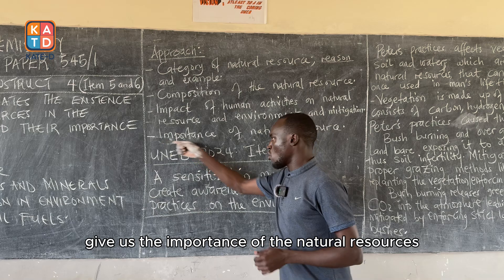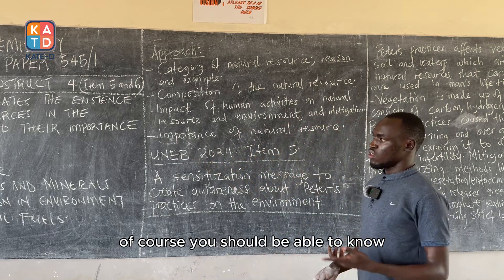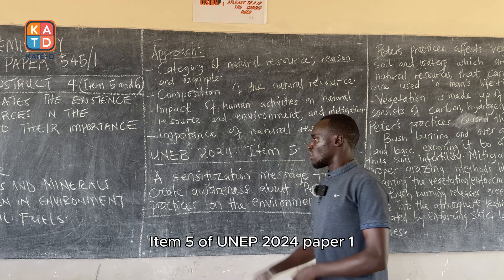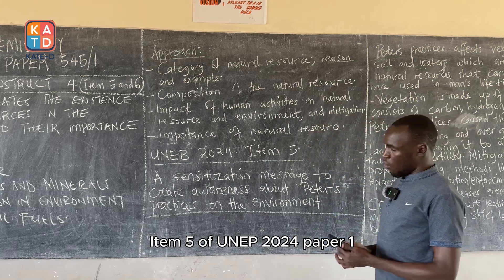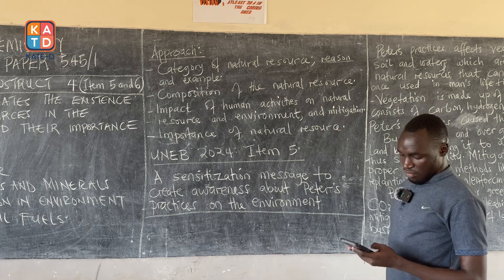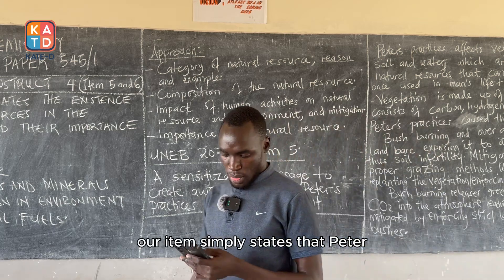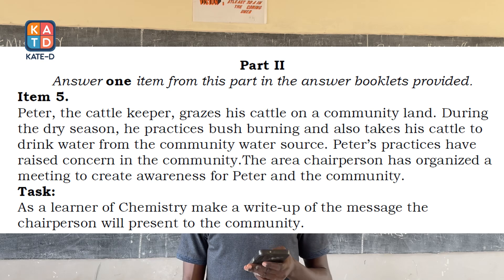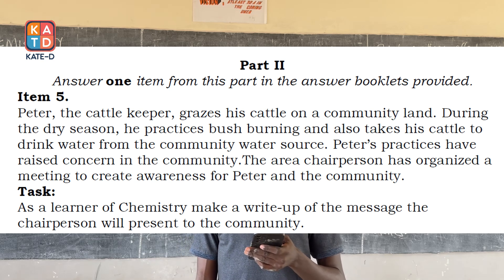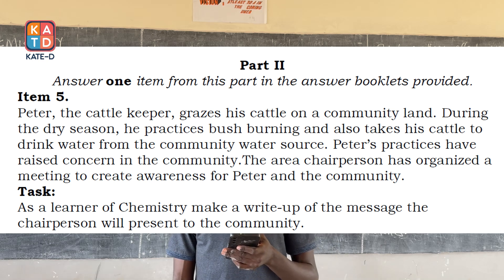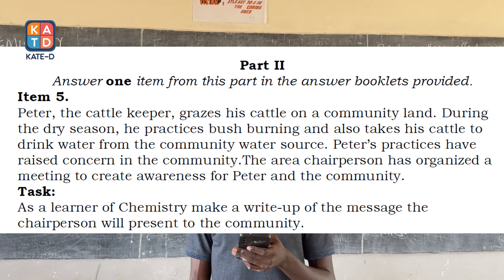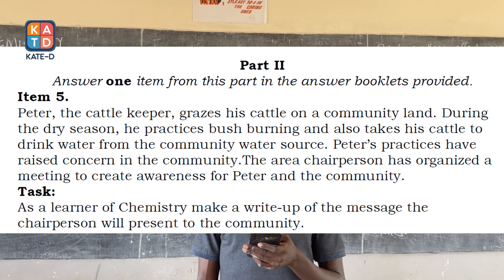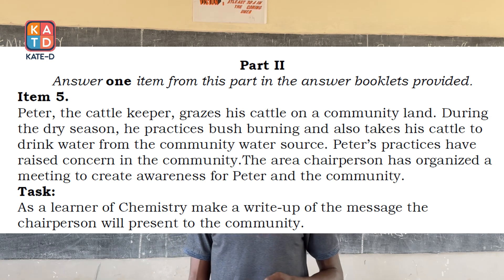Thereafter, give the importance of the natural resources — you should be able to know the importance of the natural resources you are talking about. Now we are going to look at Item 5 of UNEV 2024, Paper 1. The item states that Peter, the cattle keeper, grazes his cattle on community land. During the dry season, he practices bush burning and also takes his cattle to drink water from the community water source. Peter's practices have raised concern in the community, and the area chairperson has organized a meeting to create awareness for Peter and the community.